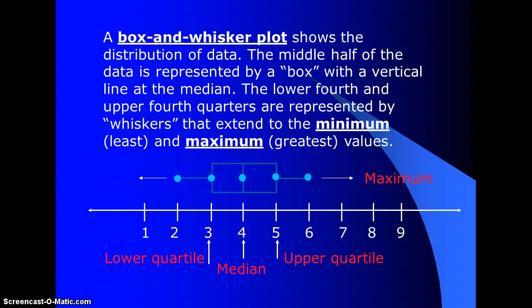The maximum or upper extreme of this data is six. And the minimum or lower extreme is two. The whiskers represent 25% each. So you have 25% here, 50% here, and 25% here for 100% of your data.